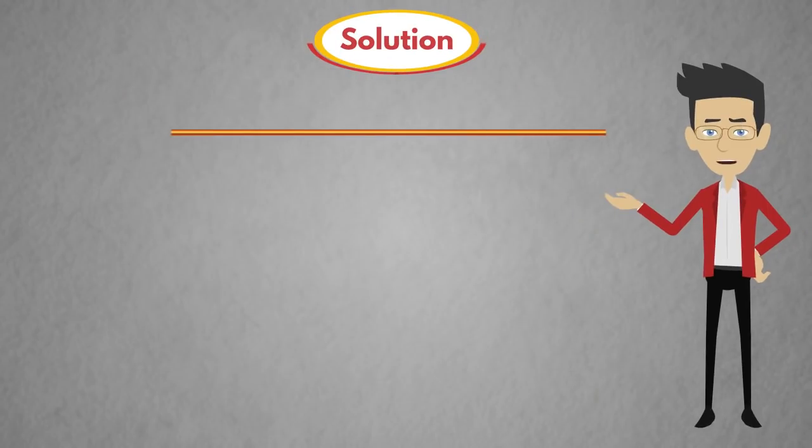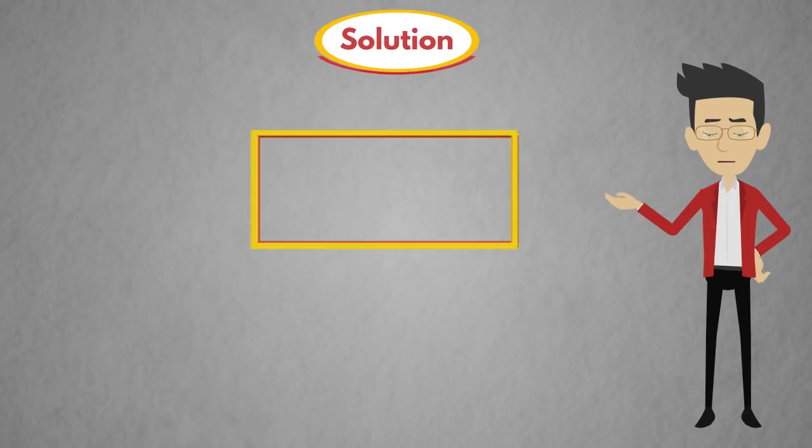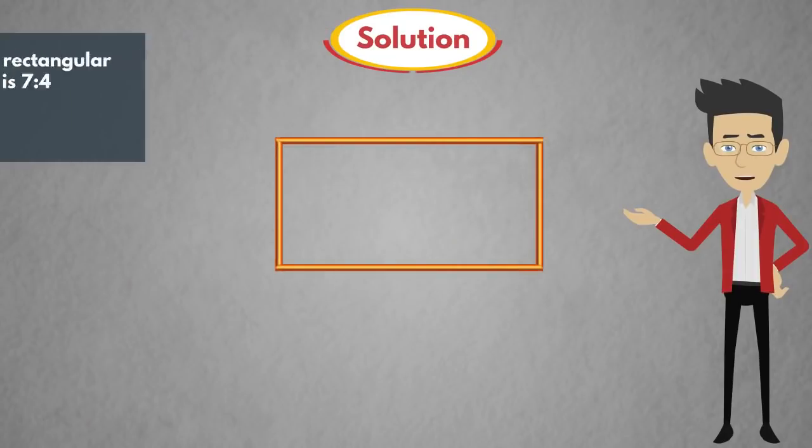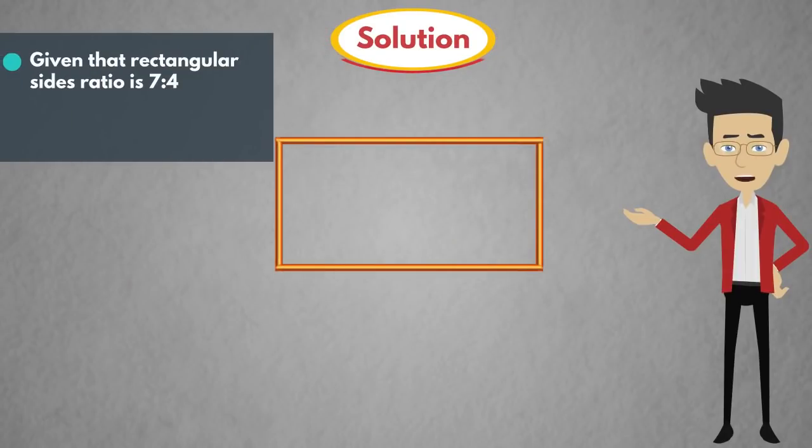Now, form a rectangle using this wire. So, this rectangle's perimeter is 88 m. In the question given, the rectangular sides ratio is 7 is to 4. So, rectangular sides should be 7x and 4x.